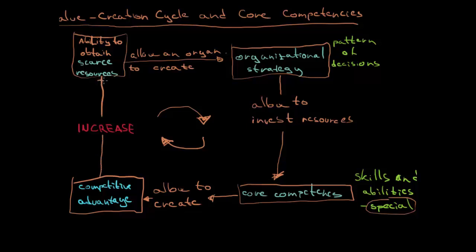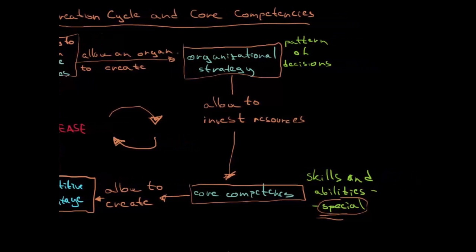And having this competitive advantage will simply increase our ability to obtain scarce resources. So let's recap: the company begins with the ability to obtain scarce resources. This allows the organization to create an organizational strategy — a pattern of decisions — which allows us to invest resources into core competencies, creating competitive advantage and cycling back to increase our ability to obtain scarce resources.